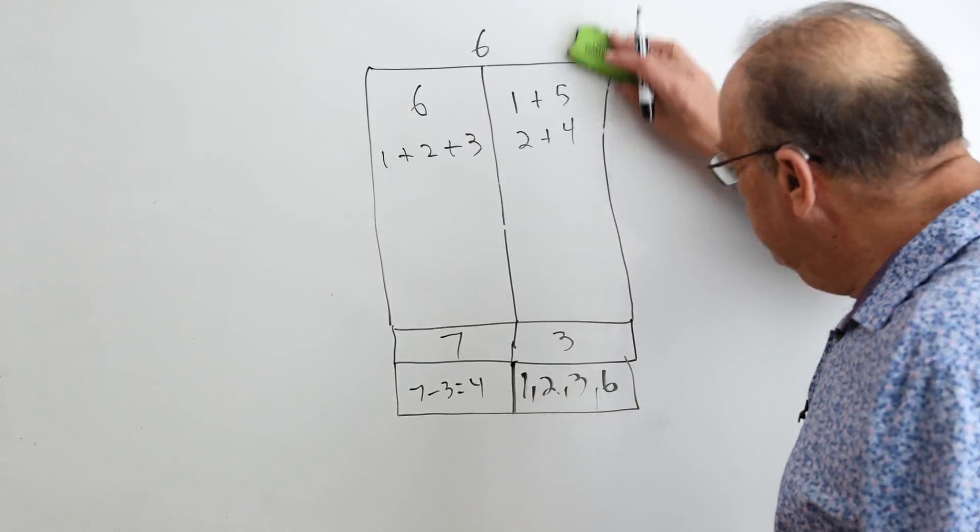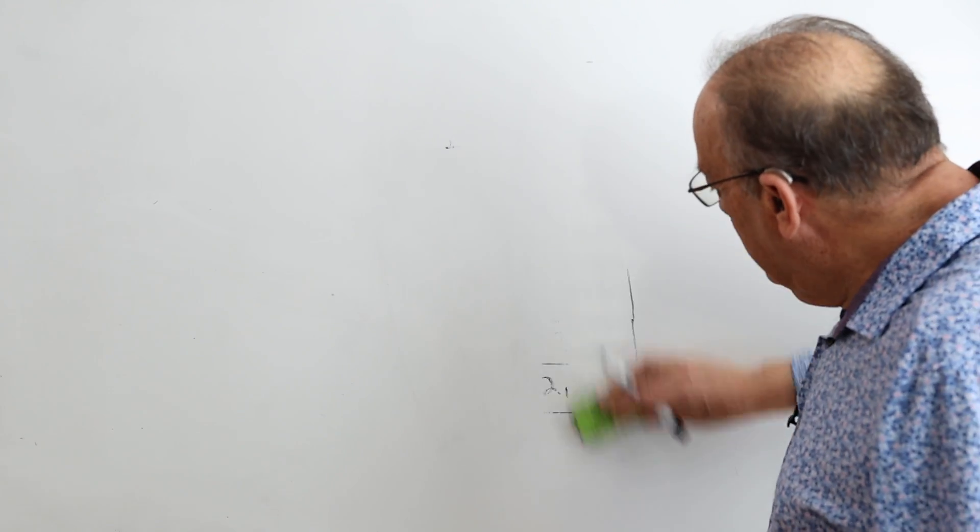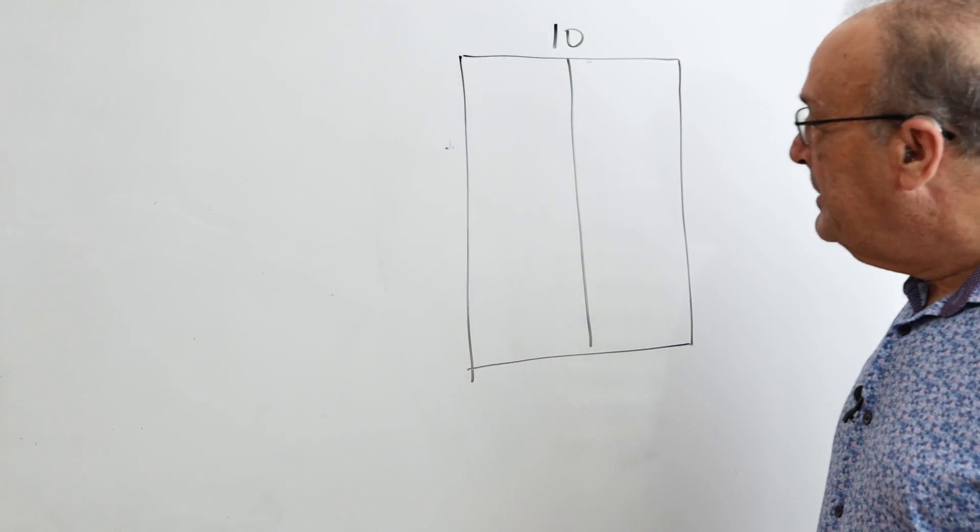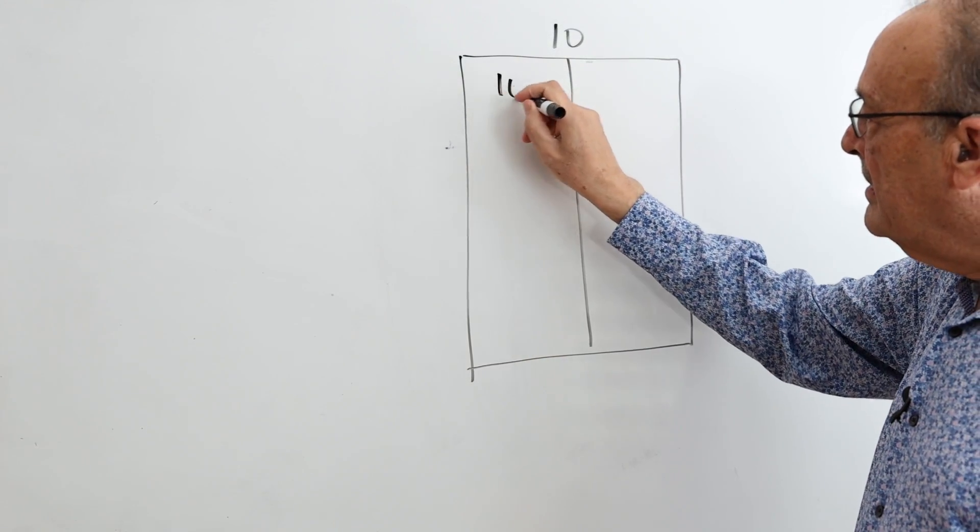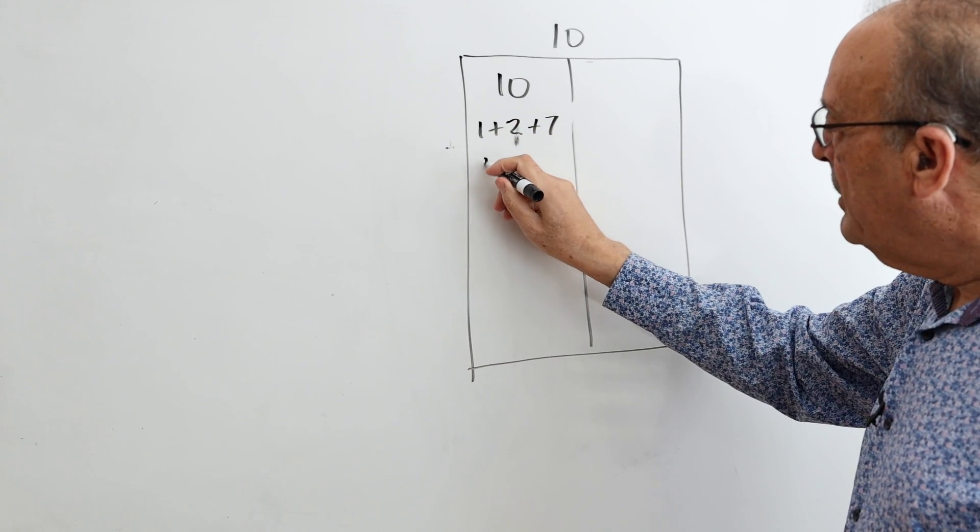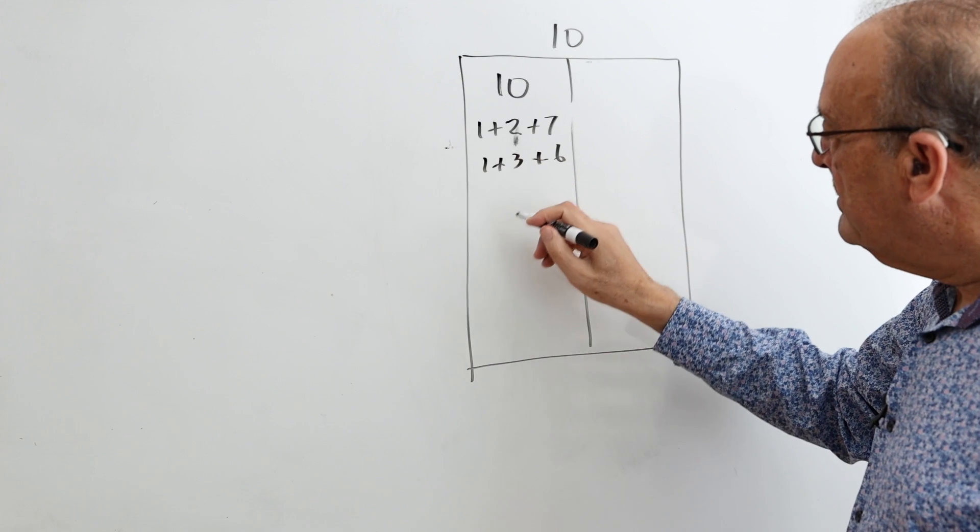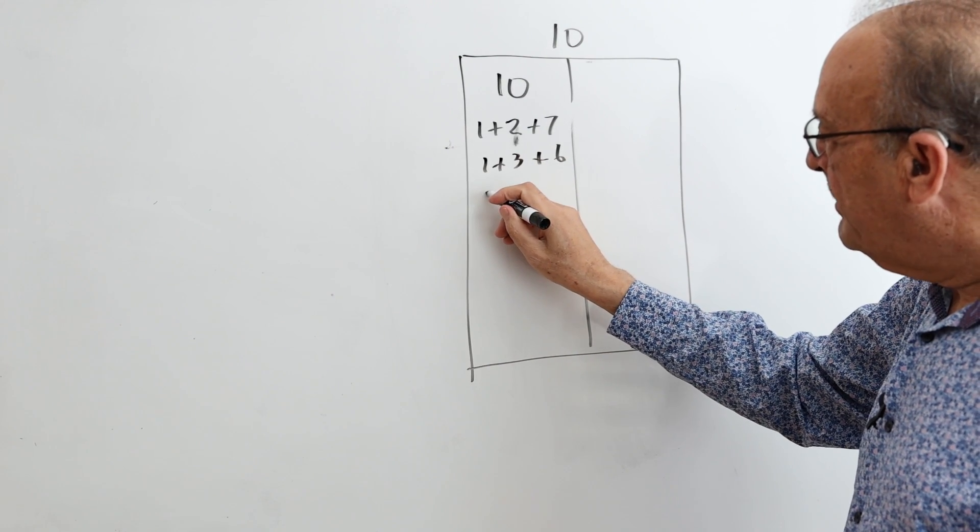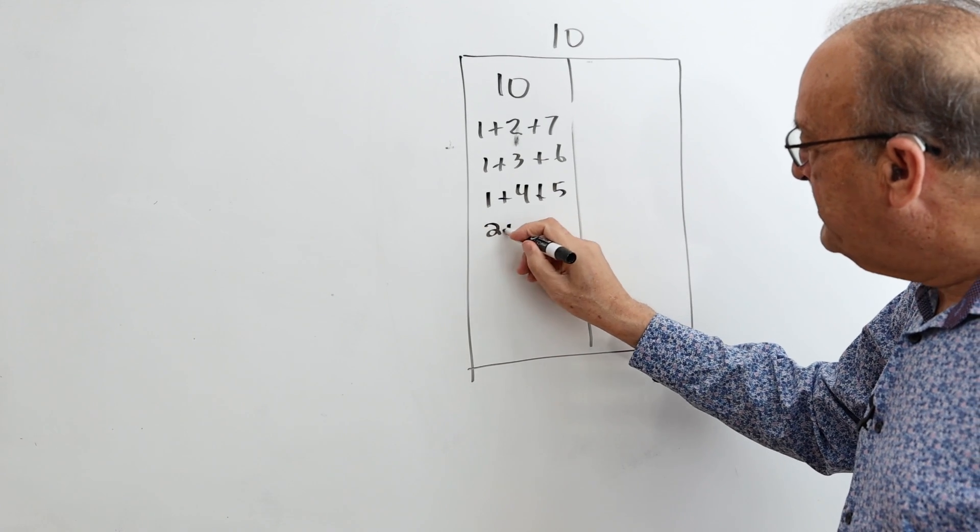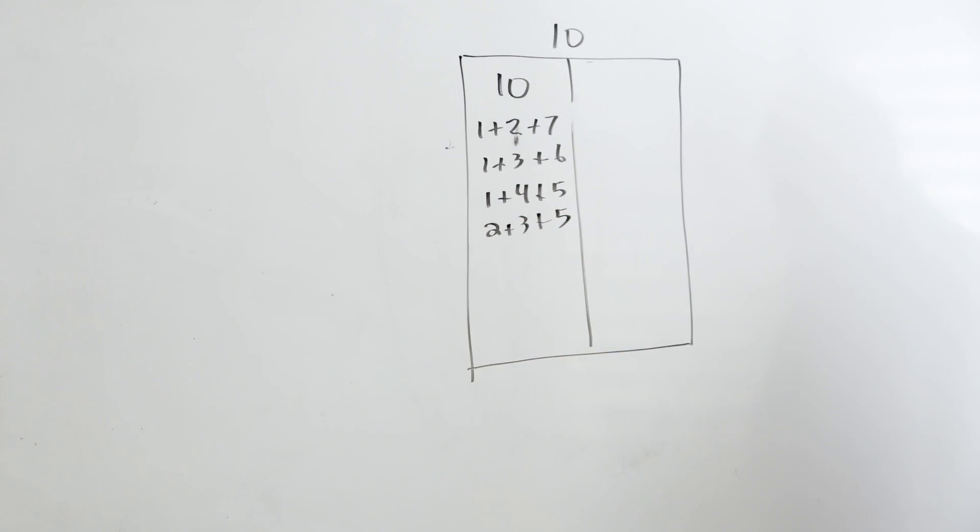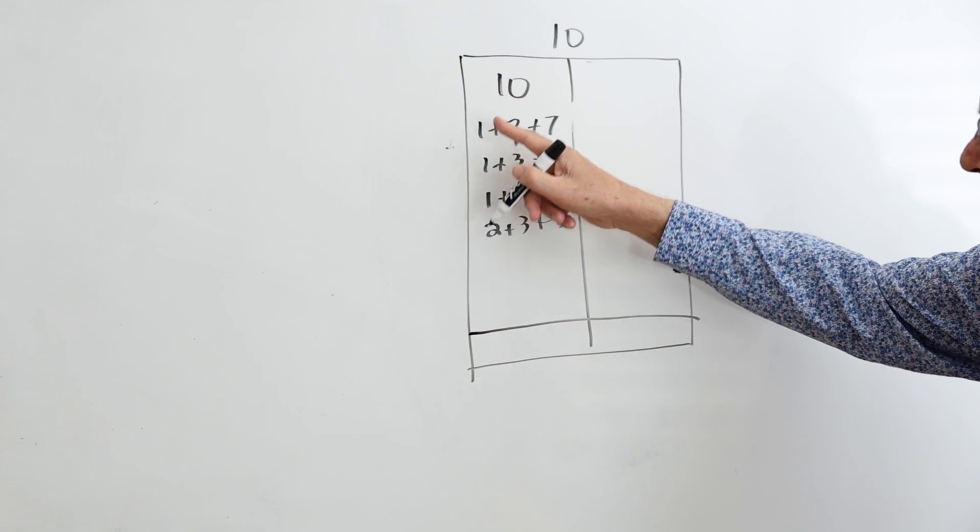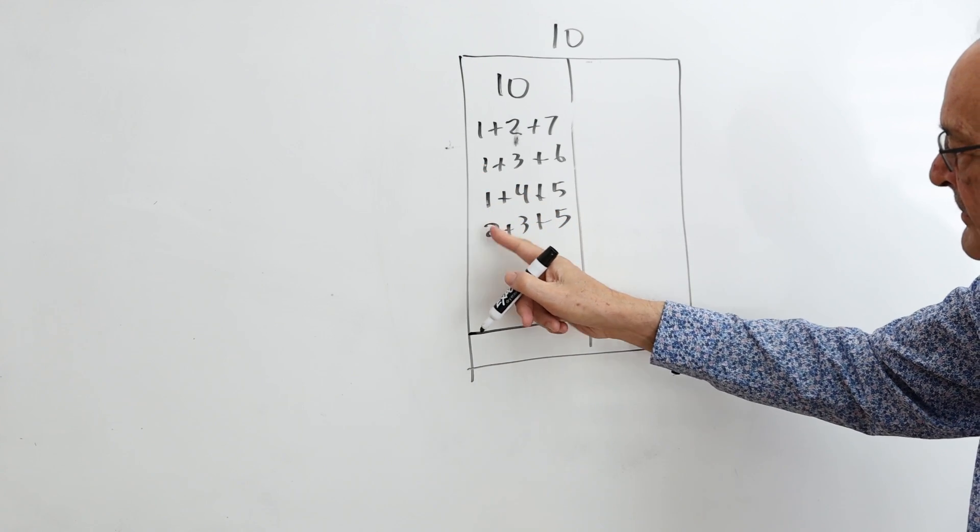Let's try another example. Let's jump up to maybe 10. Again, so I can write 10 as 10, or I can write it as 1 plus 2 plus 7, or 1 plus 3 plus 6, or 1 plus 4 plus 5, or 2 plus 3 plus 5. And that's all the ways. So if I add up the first numbers, I get 1, I get 10, 11, 12, 13, 15.